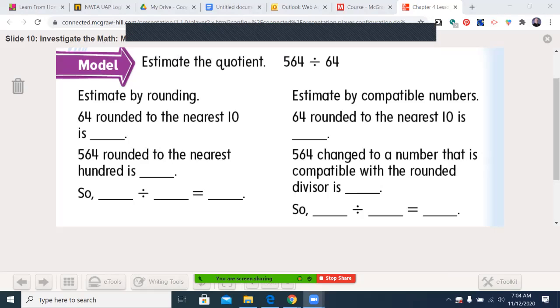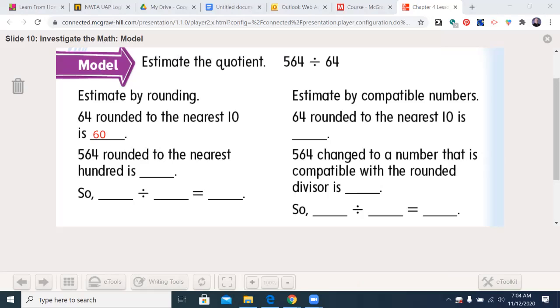One, estimate by rounding. 64 rounded to the nearest 10 is, and if you just shouted out 60, I heard you, because it is. 564 rounded to the nearest 100. So if we're going to the hundreds place, we look to the number to the right. 6 is greater than 4, so it's going to go up to 600.